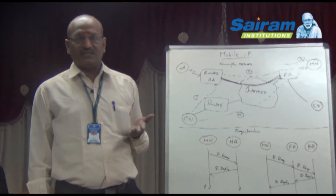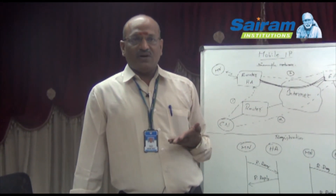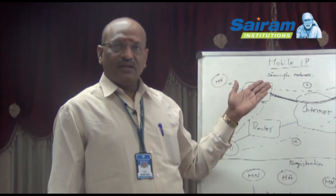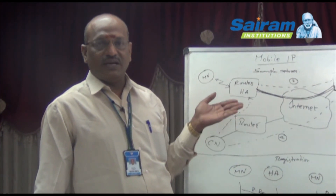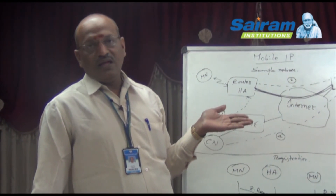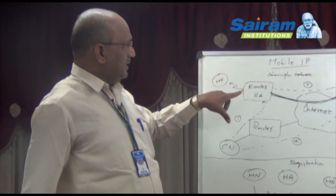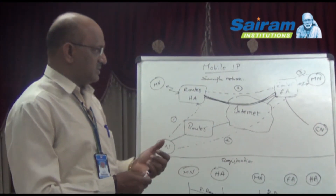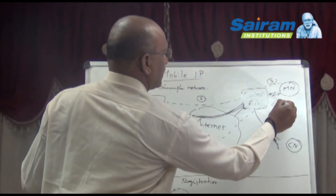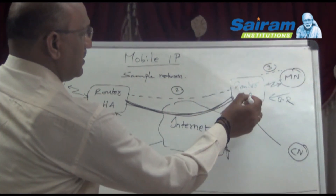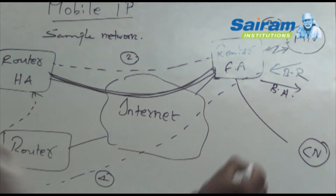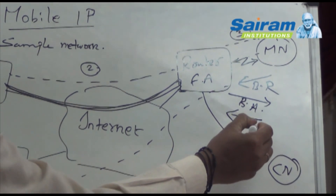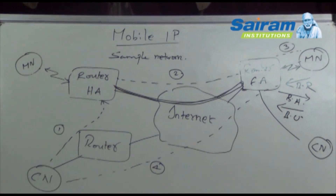Binding is done with the help of four kinds of messages: binding request, binding update, binding warning, and binding acknowledgement. Any mobile node in motion must send these four messages. Whenever the mobile node moves from the home network to a foreign network, it transmits a binding request. In turn, the router sends back a binding acknowledgement, and once received, the mobile node sends back the binding update. These three are the common messages involved in binding.